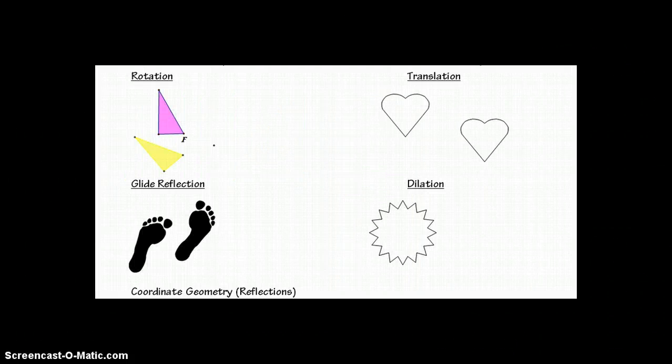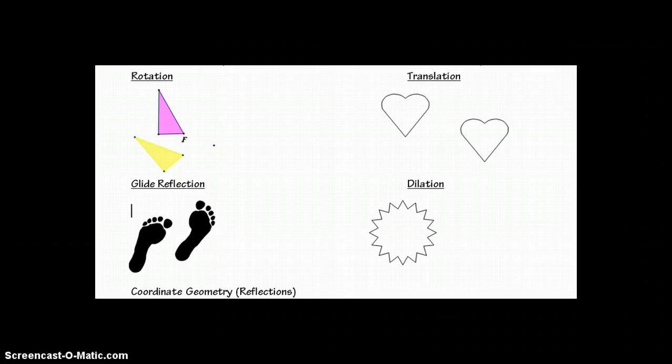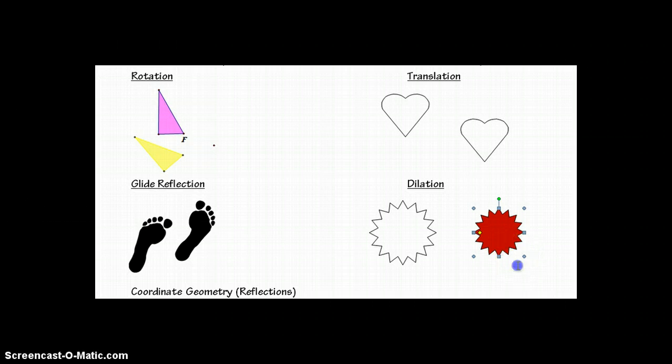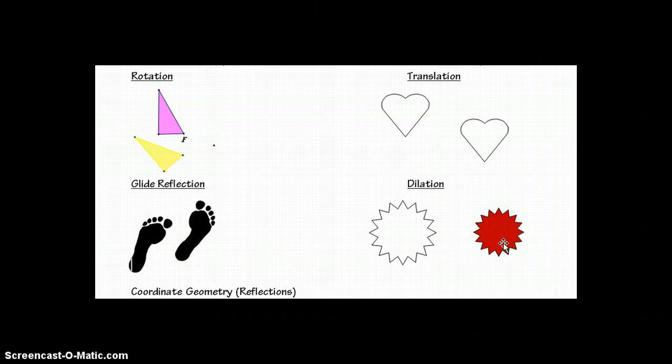Finally, this brings us to dilation, which is an enlargement or reduction. If our original image is this starburst, just draw yourself a regular five-pointed star. If we shrink it down and maintain its shape, keeping all the angles the same, they're similar figures, and it's a perfect reduction of the original. That's a dilation.